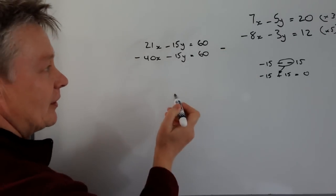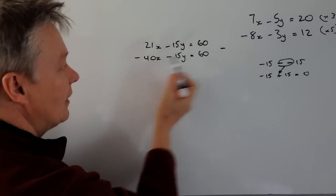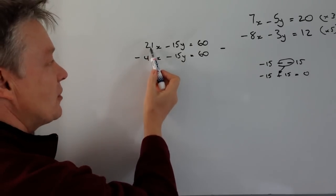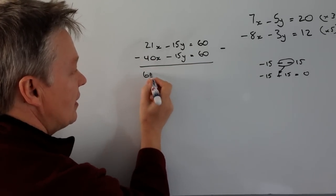But I have to do it with everything else as well. So let's look at that. I've got 21x minus minus 40x. Well, minus and minus is a plus, so it becomes 21 plus 40x. So that becomes 61x.